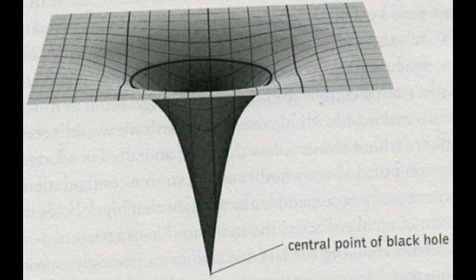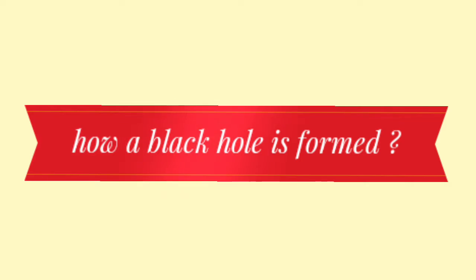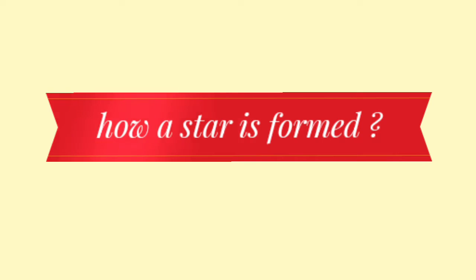How is a black hole formed? First, let's know about how a star is formed. Star formation is the process by which dense regions within molecular clouds in interstellar space, sometimes called star-forming regions, collapse and form stars.